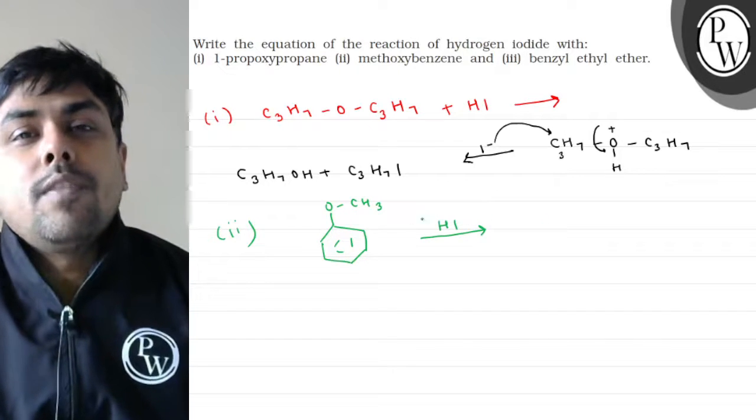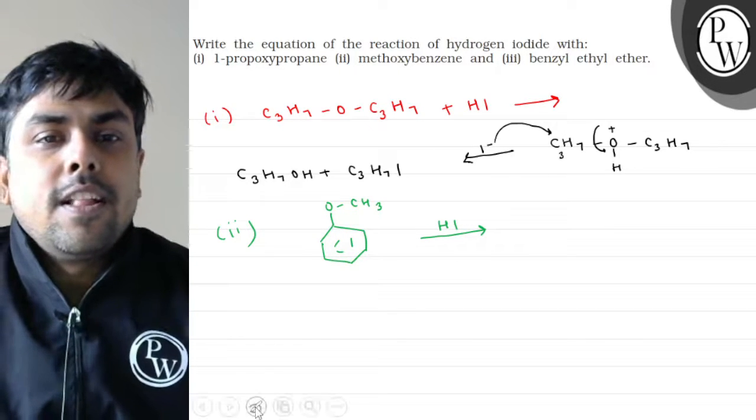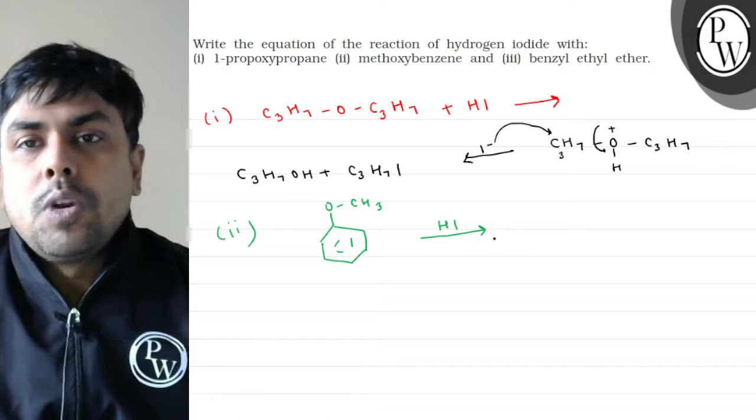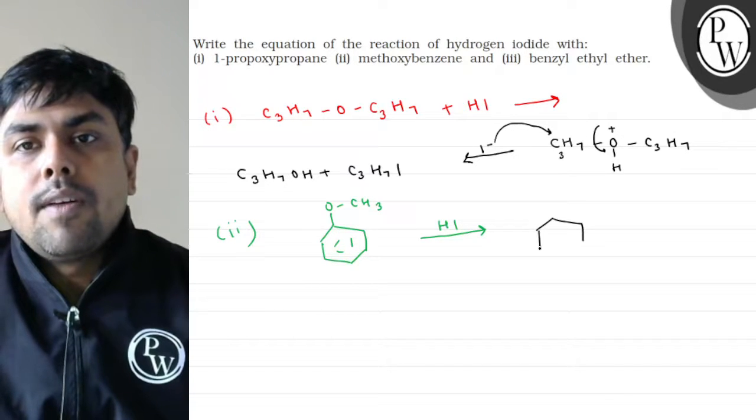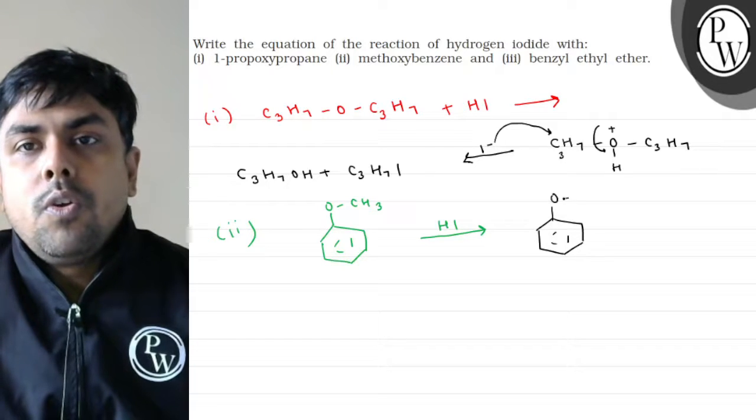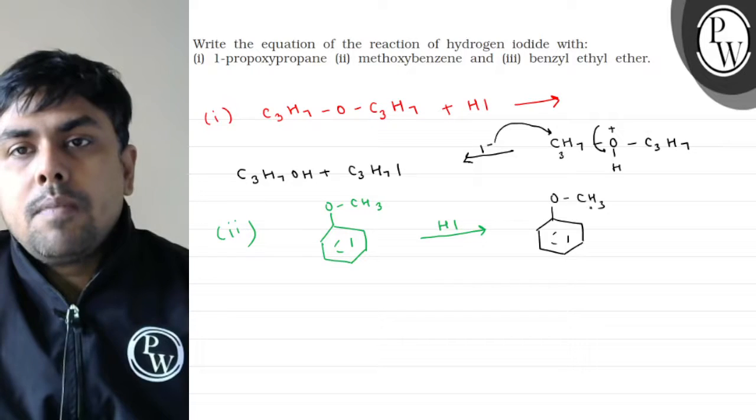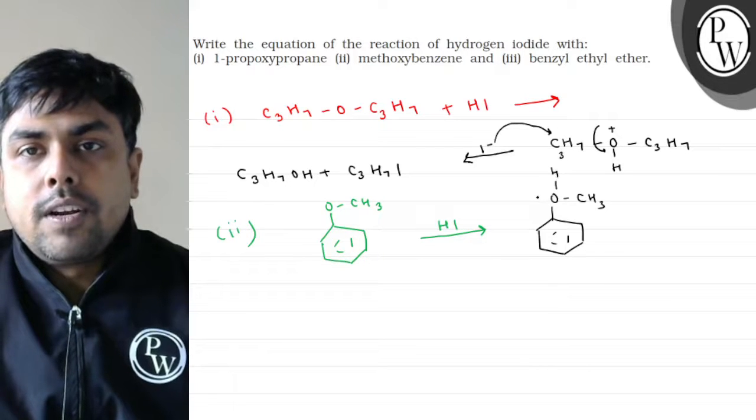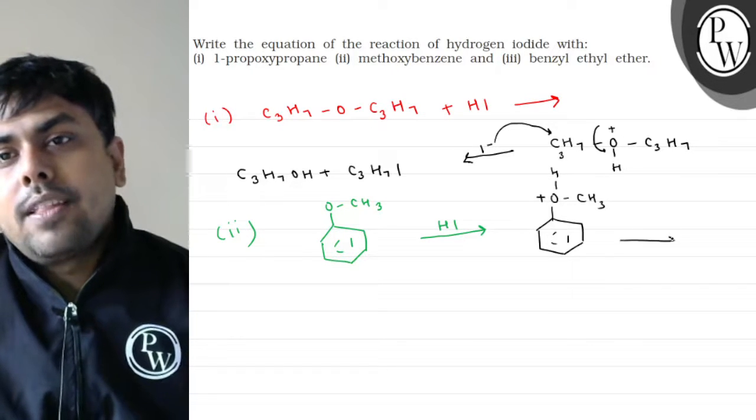What is HI? Source of H+. What should we do? This will protonate. So I have methoxybenzene, O-CH3, H+, right?